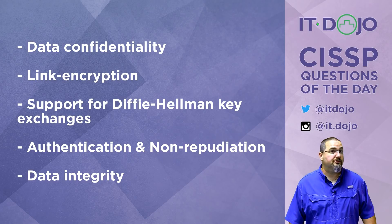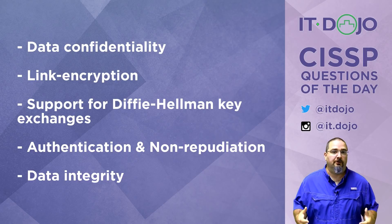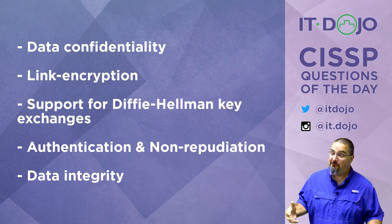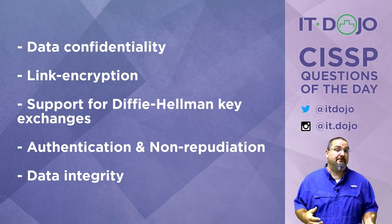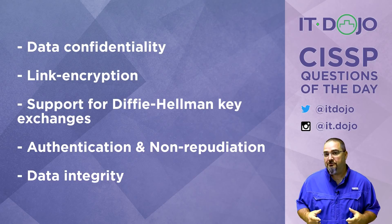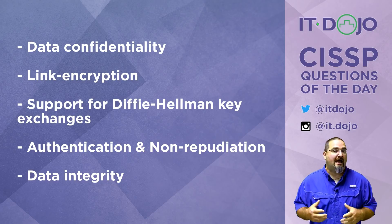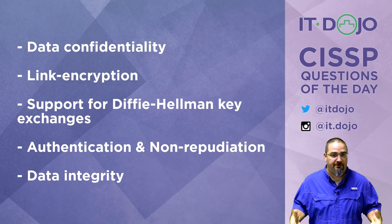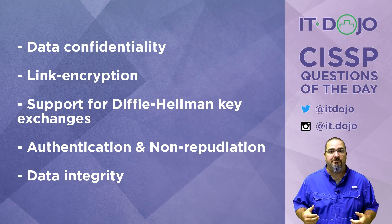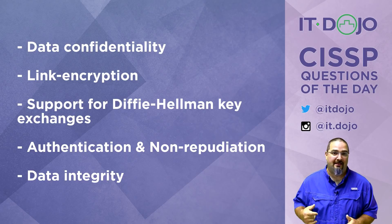Choice number one says the most important thing you're going to get from a public key infrastructure is data confidentiality — and that is not true. This can be confusing if you're not feeling solid about what PKI does and does not do. Data confidentiality is something that can ultimately be achieved because of a PKI, but the PKI itself does not provide data confidentiality. The PKI provides a trust mechanism so that when you do finally achieve data confidentiality, it's actually with who you think it's supposed to be. Data confidentiality is an outgrowth of that, but not the thing the PKI itself does.